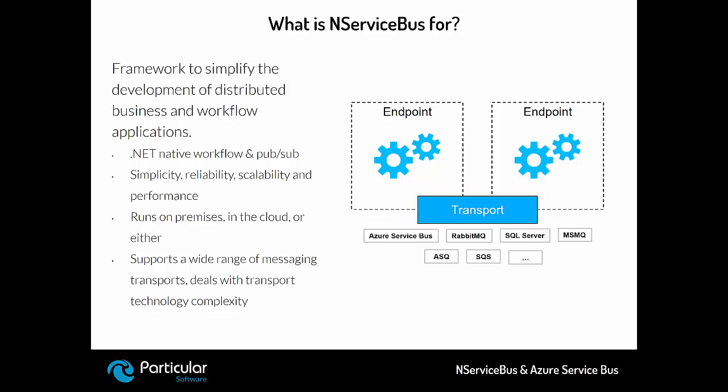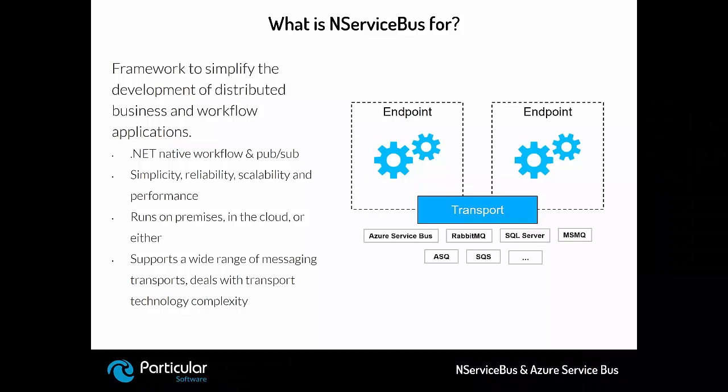NServiceBus with Azure Service Bus as a transport can run either on-premises, in the cloud, or as a hybrid solution. It supports a wide range of messaging transports — Azure Service Bus is one of them. The transport is abstracted by NServiceBus for the developers, and using Azure Service Bus can be as simple as using RabbitMQ, SQL Server, Azure Storage Queues, Amazon SQS, or any other transports provided by the community.